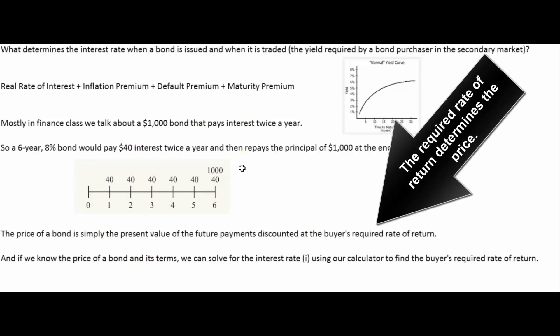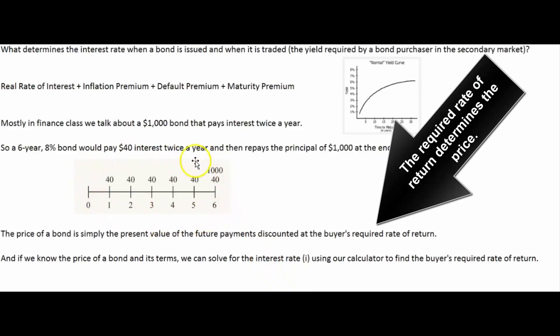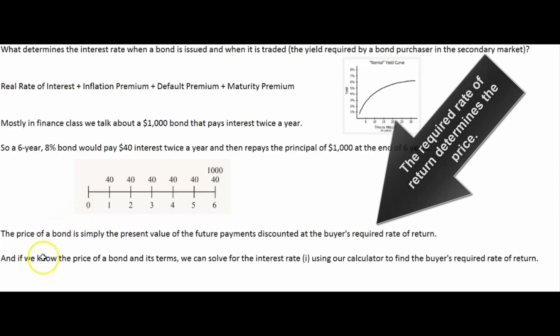The price of a bond is simply the present value of the future cash flows discounted at the buyer's required rate of return. If I wanted to earn eight percent, I would pay a thousand dollars for this bond, receive forty dollars every six months, and get my thousand dollars back at the end. If we know the price at which a bond is trading in the secondary market and we know its terms, we can use a calculator to solve for the interest rate — the buyer's required rate of return.